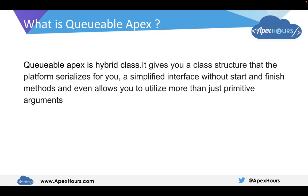Future methods do not allow non-primitive arguments. So what happens in Queueable? A Queueable class does not have start and finish methods. It only has one method, which is execute. And it also allows you to have non-primitive data types, just like SObject data types. So it is a mixture of batch and future methods.